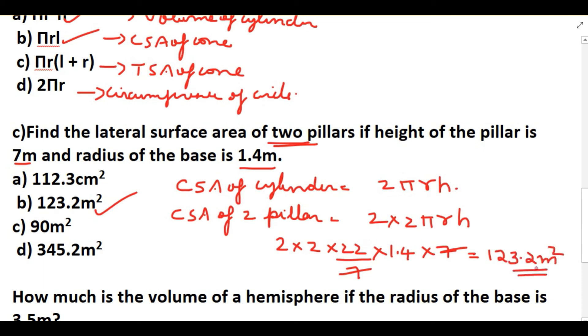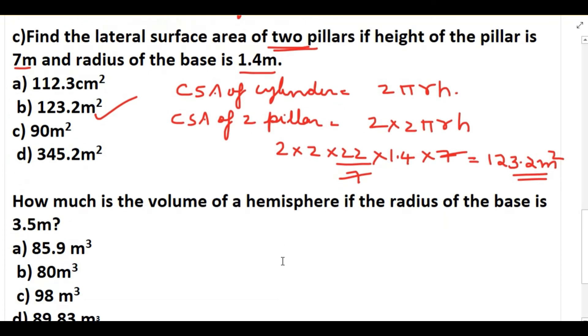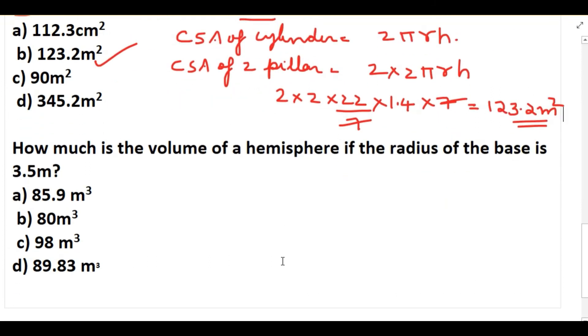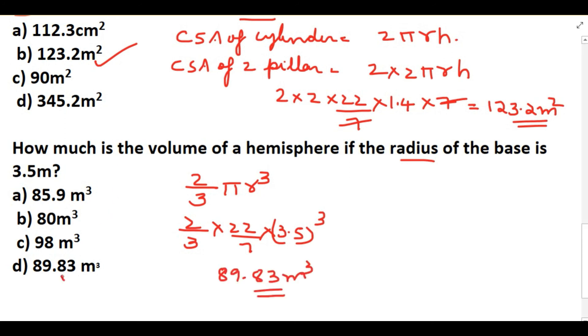Next question: How much is the volume of the hemisphere if radius of the base is 3.5 meters? We know the formula to find out volume of the hemisphere is 2/3 πr³. So 2/3 × 22/7 × r³ is 3.5 the whole cube, because radius of the base they have given. When you simplify this will be getting 89.83 m³. So this is the volume of the hemisphere.